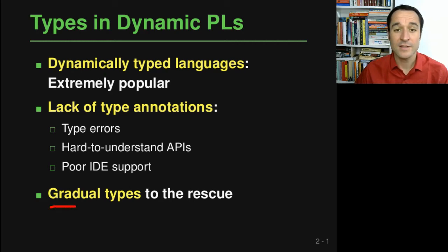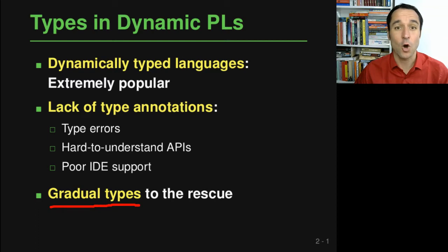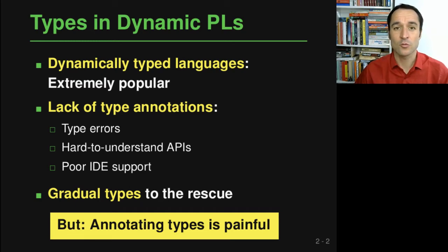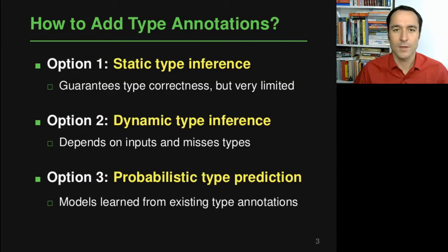Fortunately there's an idea called Gradual Types, which means you can add some type annotations to your program and type checking will be done only on those added annotations. But someone still needs to add these annotations to an existing code base, and it turns out programmers do not really like to spend a lot of time annotating types. So how can we automatically add types to an existing code base?